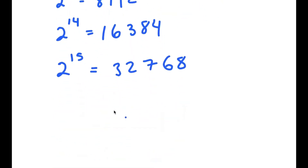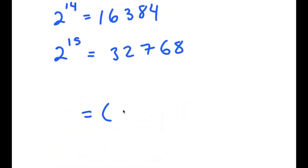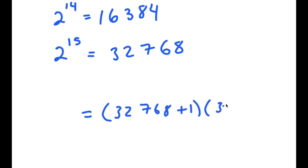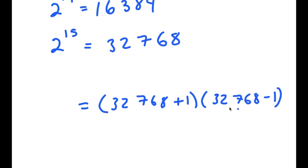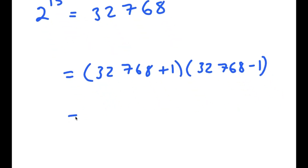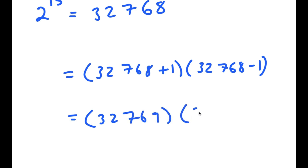So I have 32,768 plus 1, times 32,768 minus 1. And now this is equal to 32,769 times 32,767.